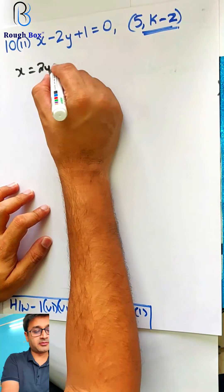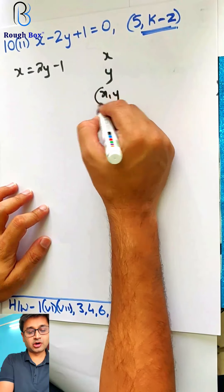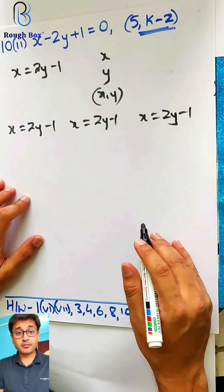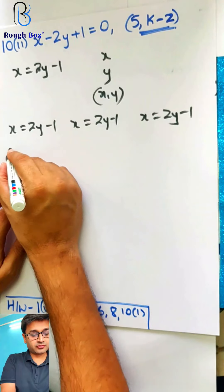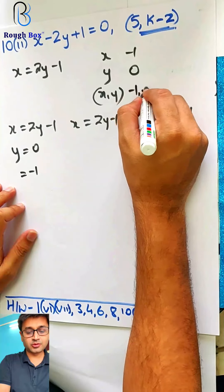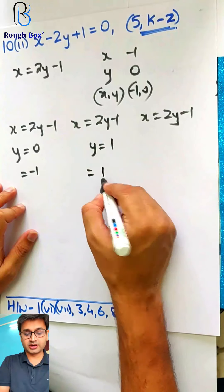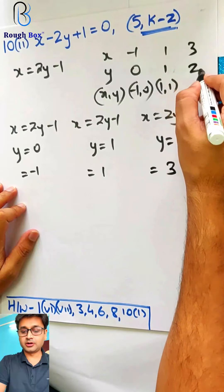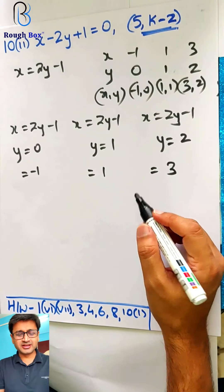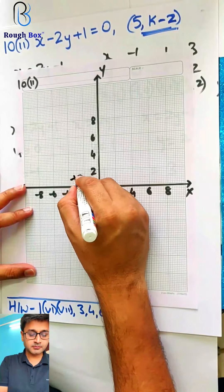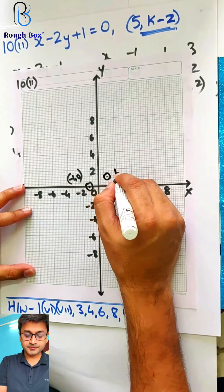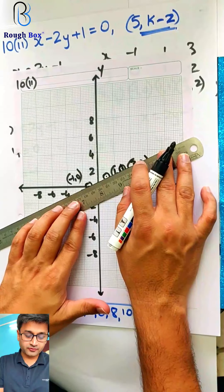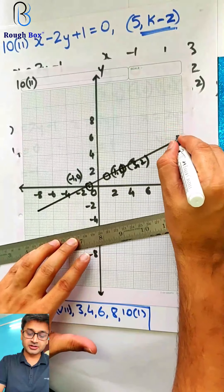Taking x as my subject: x equals 2y minus 1. Substituting values — y equals 0: x becomes minus 1, so first point (minus 1, 0). y equals 1: 2 minus 1 is 1, so second point (1, 1). y equals 2: 4 minus 1 is 3, so third point (3, 2). Let's quickly plot: (minus 1, 0), then (1, 1) here, and (3, 2) here. Let's draw a line — has to be collinear obviously. Draw a bigger line so that in case you have to find other parts, you can easily find them.